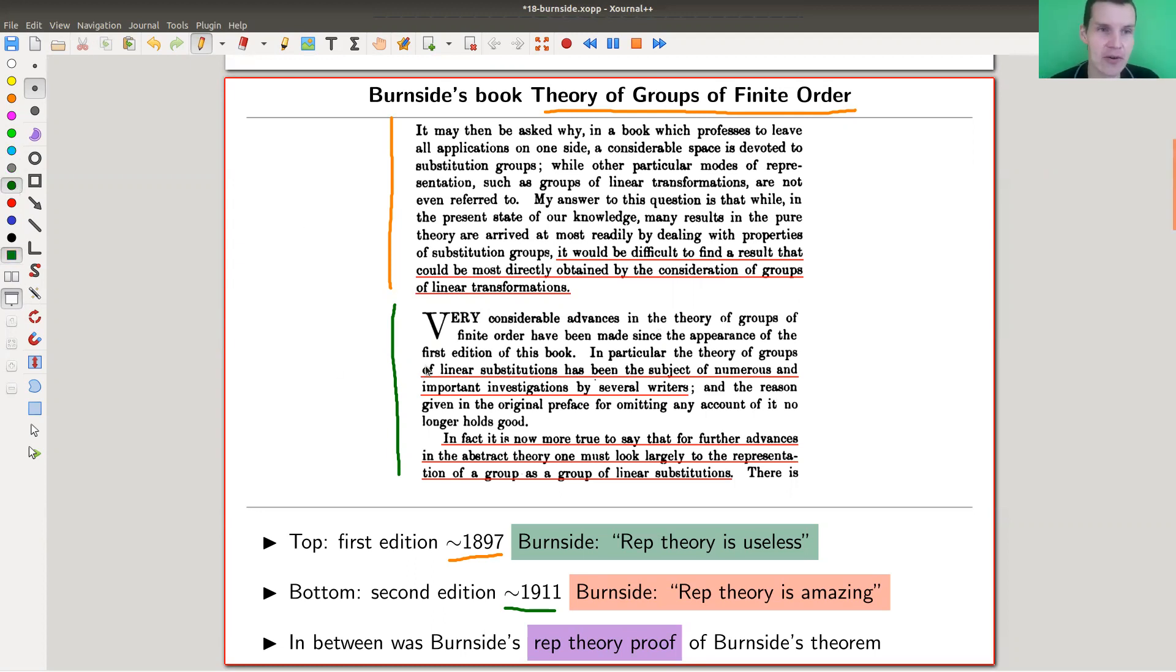Then it changed completely. Groups of linear substitutions—representations—has been the subject of numerous and important investigations by several writers, including Burnside. In fact, it's now more true to say that for further advantages in the abstract theory of groups, one must look largely to the representation of a group as a group of linear substitutions. So in order to advance group theory further, one basically needs to study representation theory. From "representation theory is useless" to "representation theory is amazing." That's quite a change of mind. And in between was this famous Burnside's proof of Burnside's theorem, a representation theory proof of a purely group theoretical theorem. Very nice historical remark.